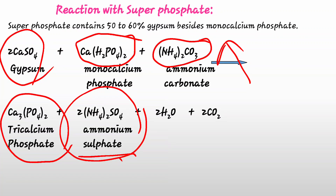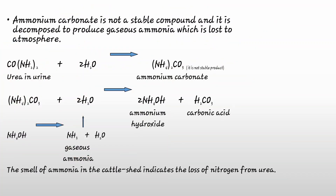The recommended application rate is 450 to 900 grams of single superphosphate (SSP) per day per animal in the cattle shed, applied in places where animals pass urine. Urine contains urea as the main constituent, and urea is capable of converting to ammonium carbonate in the presence of moisture. Ammonium carbonate is not a stable compound.